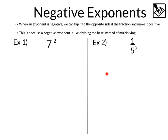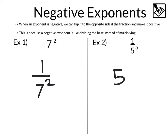Don't be negative, but we have a couple more laws to cover — negative exponents. When an exponent is negative, we can flip it to the opposite side of the fraction and make it a positive. This is because a negative exponent is like dividing the base instead of multiplying. So when we have seven to the negative two power, that's like we were dividing by seven twice, so we'd write one over seven to the positive two. Here we have one over five to the negative three. That would be as if we had in the denominator dividing by five three times, meaning we're going to flip that over to the numerator, giving us five to the third power positive over one. So this one over five to the negative three flips to become five to the positive three.